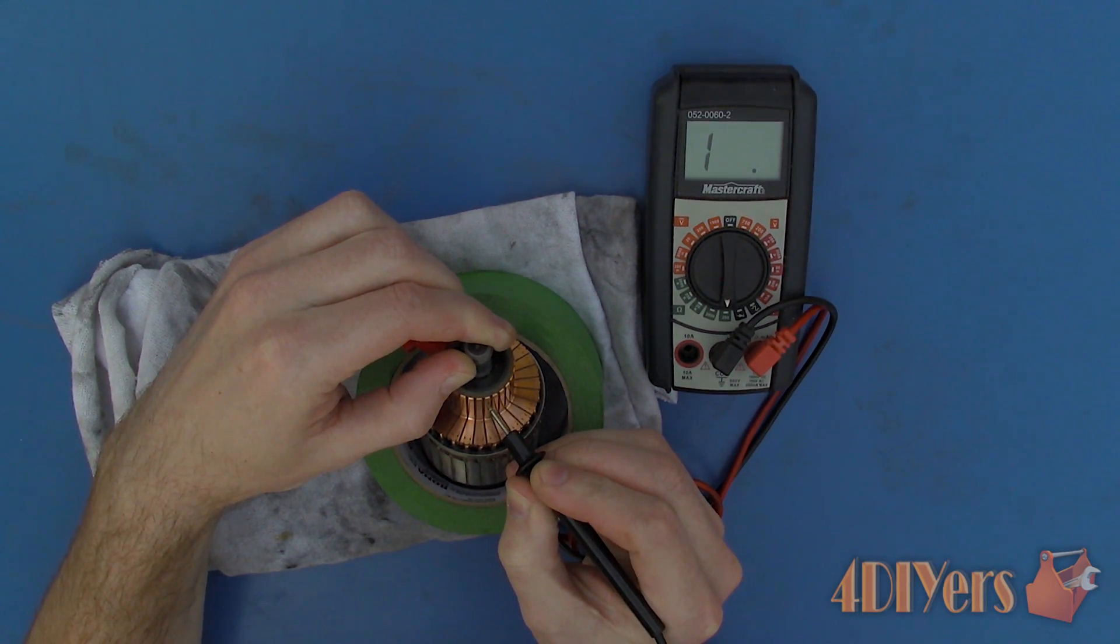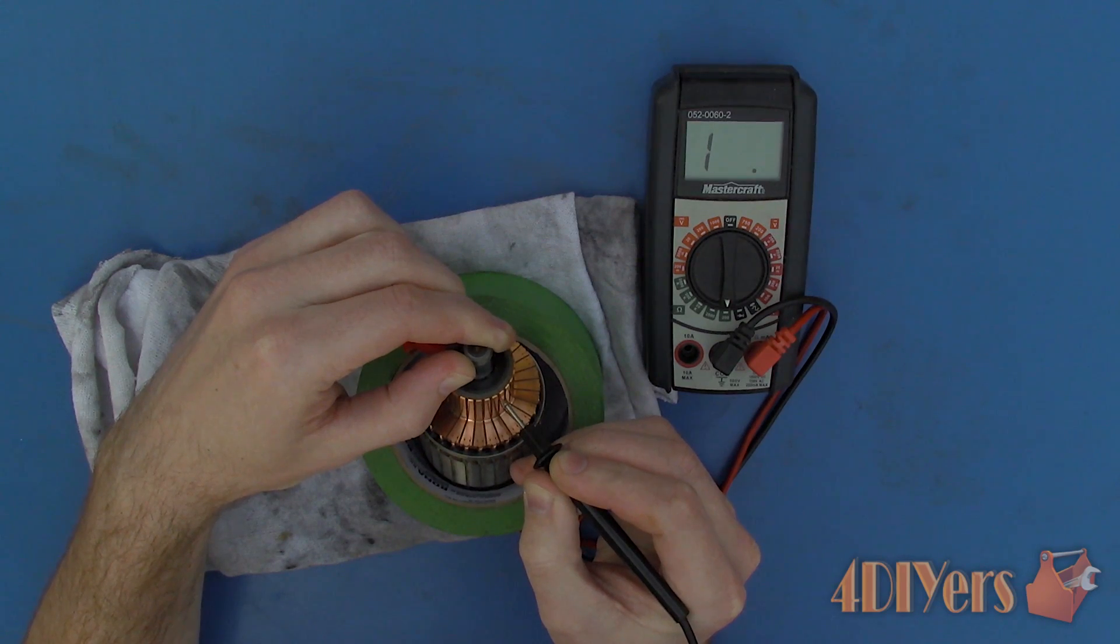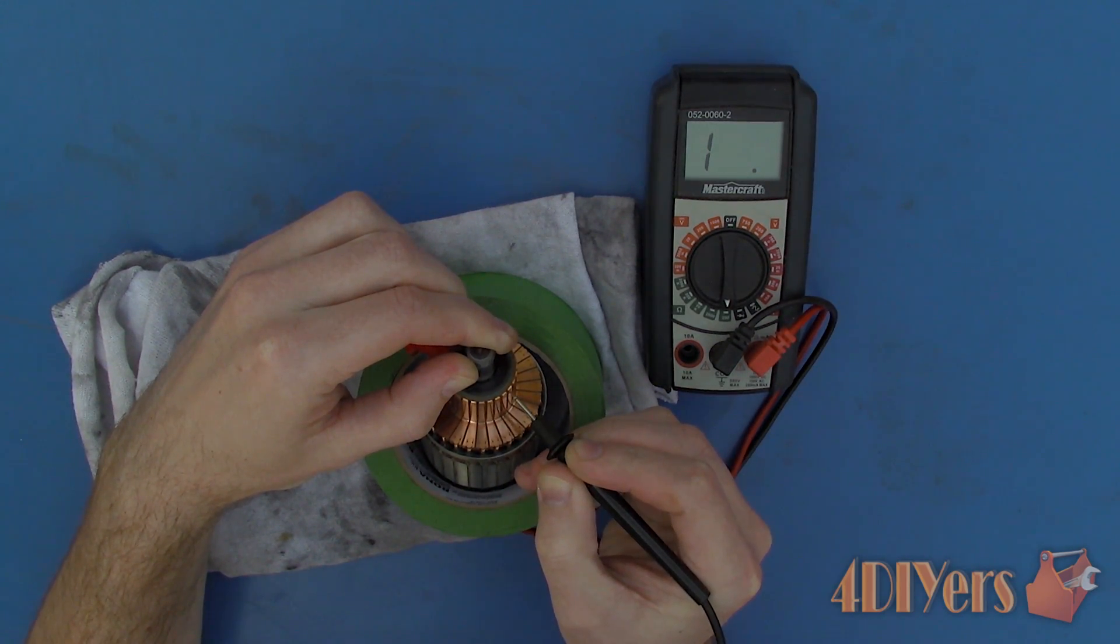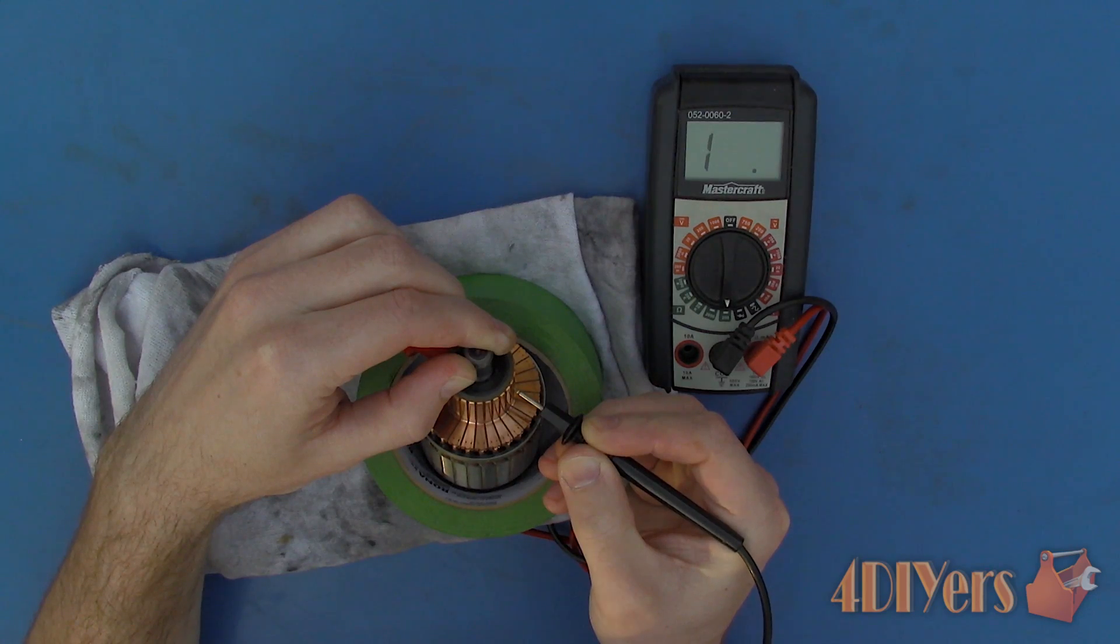Hold the one test probe on the bar of the commutator. Then hold the other on the shaft and take the reading. No reading should register on the multimeter. Otherwise that will indicate there is a short. If there is a short then unfortunately the armature will need to be replaced.